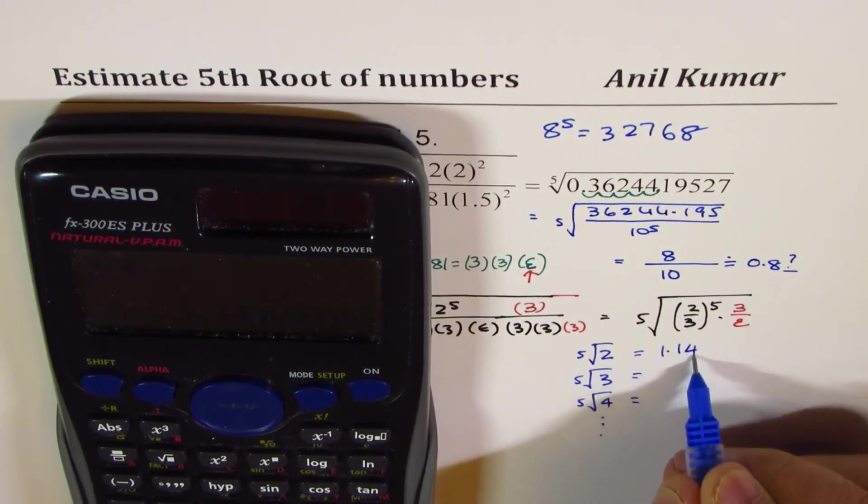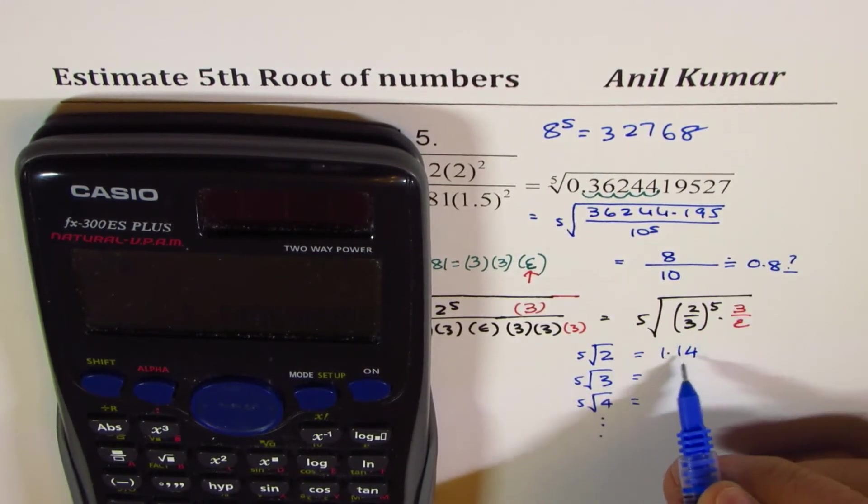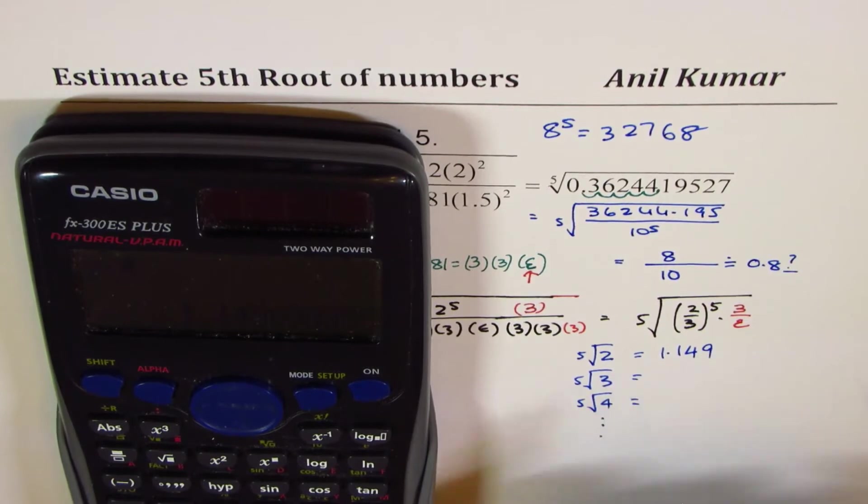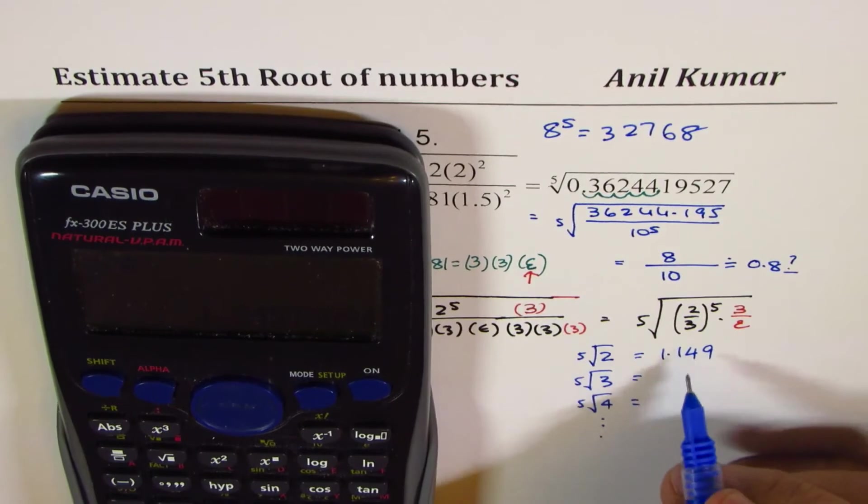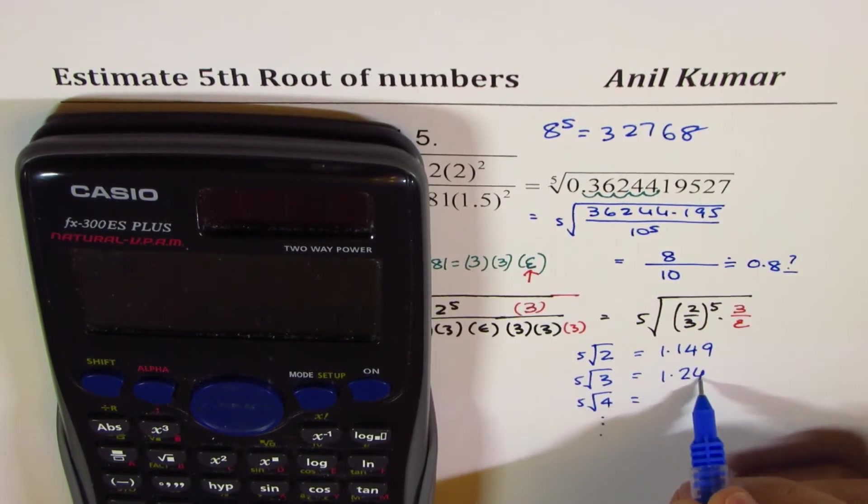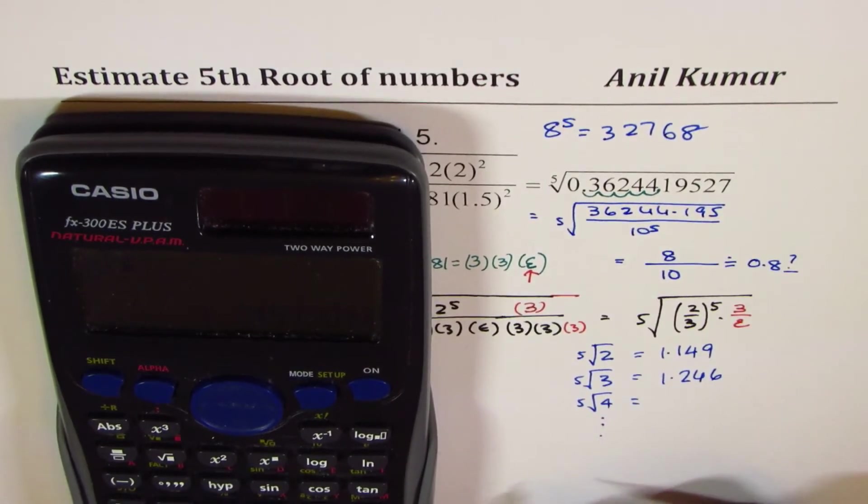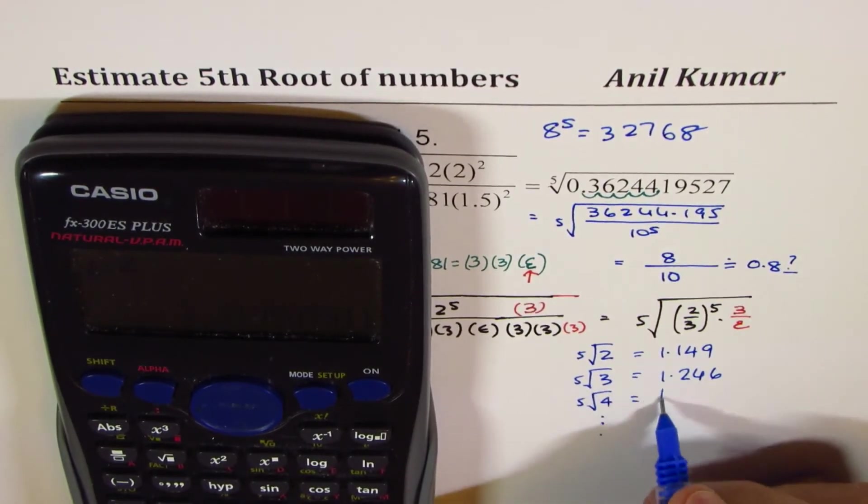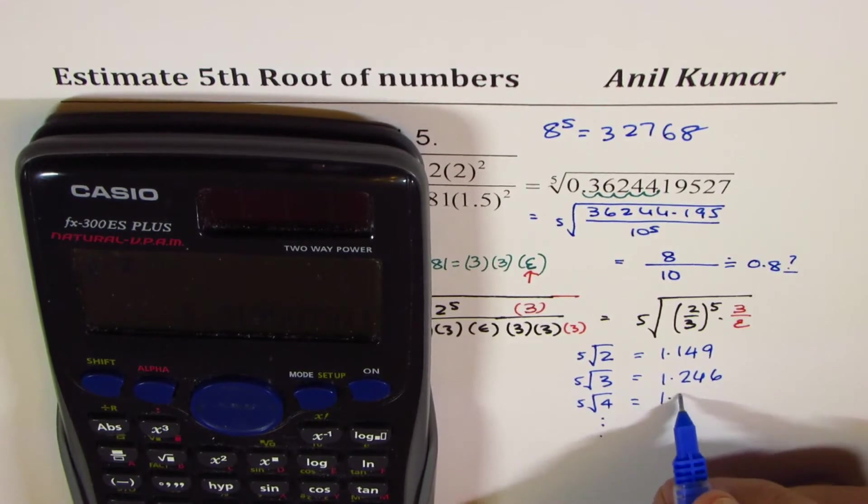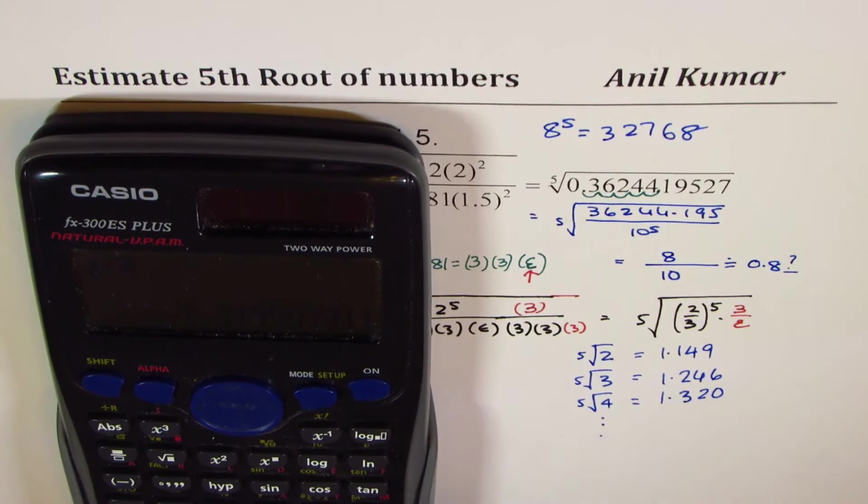So fifth root is also 2 to the power of 0.2, which is for me 1.148—I'm approximating this to 9. And 3 to the power of 0.2 is 1.245—I'm approximating to 6. And 4 to the power of 0.2 is 1.320.